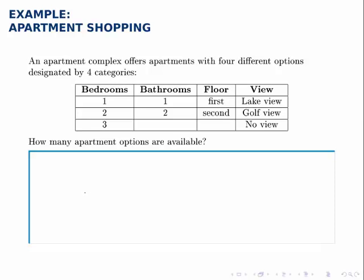In this case, we're essentially making four choices: the number of bedrooms, the number of bathrooms, which floor we're on, and which view we get. The fundamental counting principle says that if we can figure out how many ways there are to make each choice, the number of ways of making all these choices together is simply the product of these numbers.